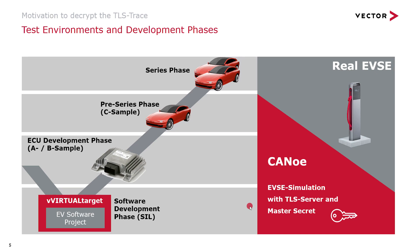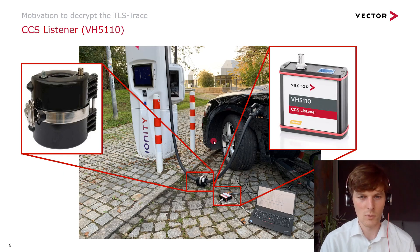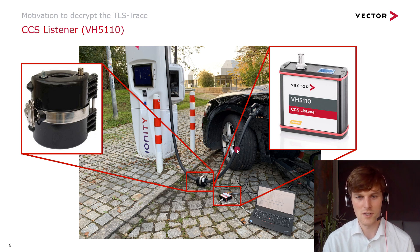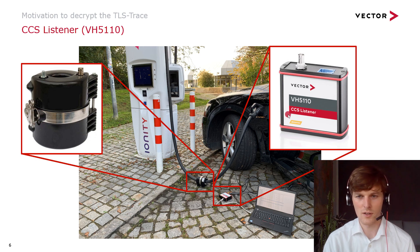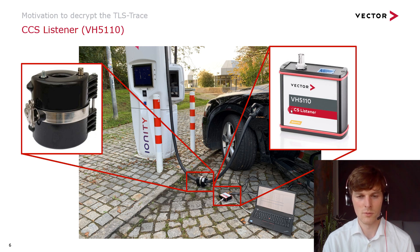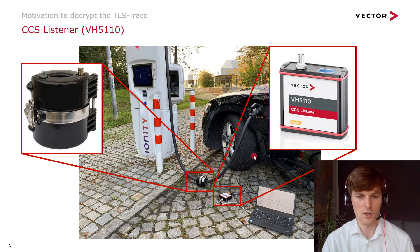But you probably also want to test your cars against real EVSEs to check interoperability. In that setup, we have our charging station and electric vehicle, and we listen to this communication with our CCS listener. The CCS listener is connected to the cable via the inductive coupler, or it can also be connected directly to the control pilot. This ensures that you listen to the communication passively — it's not a man-in-the-middle setup. You do not influence the communication between the charging station and the electric vehicle, so you can identify issues in timings or in the messages.